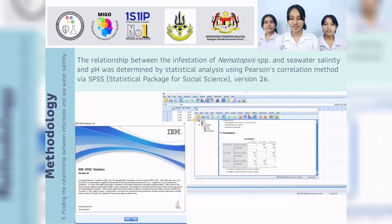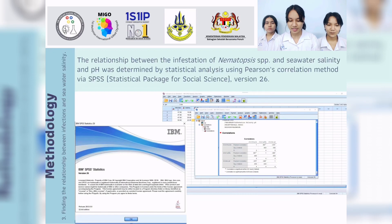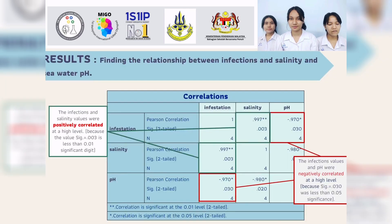Third step: finding the relationship between infection and seawater salinity. The relationship between the infection of Nematocyte SPP and seawater salinity and pH was determined by statistical analysis using Pearson correlation, SPSS version 26. The result shows that infestation and salinity values were positively correlated at a high level.